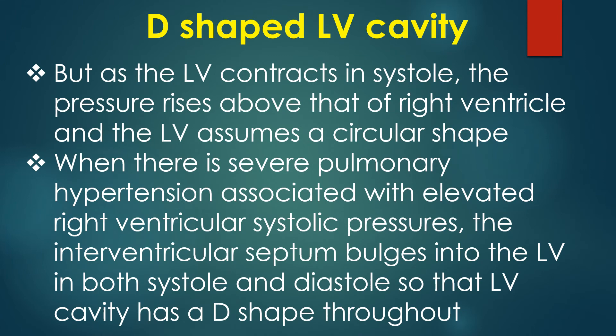But as the left ventricle contracts in systole, the pressure rises above that of the right ventricle and the LV assumes a circular shape.